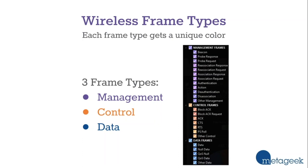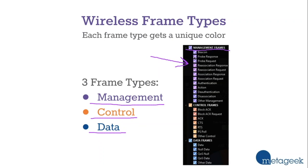There are three different main types of frames that you'll see: management frames, control frames, and data frames. We're going to demo IEPA coming up here pretty quick. There's actually a really awesome cheat sheet for all these different types of frames — a management frame and subframe types like beacons and probe requests. There's a cheat sheet built into IEPA that I'll show you a little bit later on.